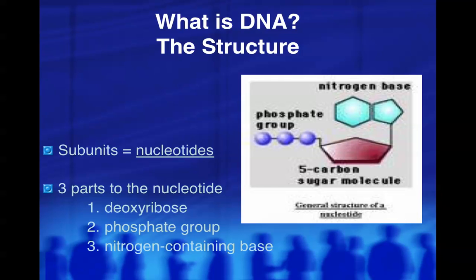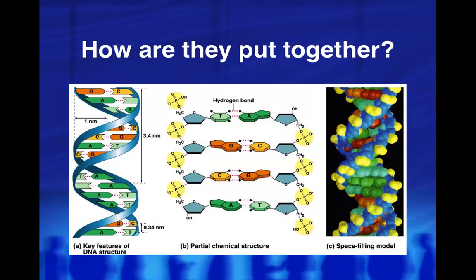There are three parts of the nucleotide: deoxyribose, phosphate, and a nitrogen-containing base. A whole bunch of nucleotides are strung together in a double-stranded structure. The middle shows that you have phosphates and sugars on the outside, and then the rungs of the ladder — if you picture it as a ladder — are your nitrogen bases.